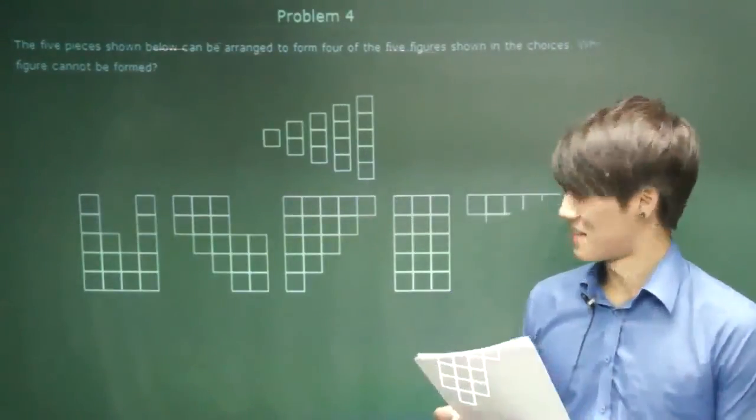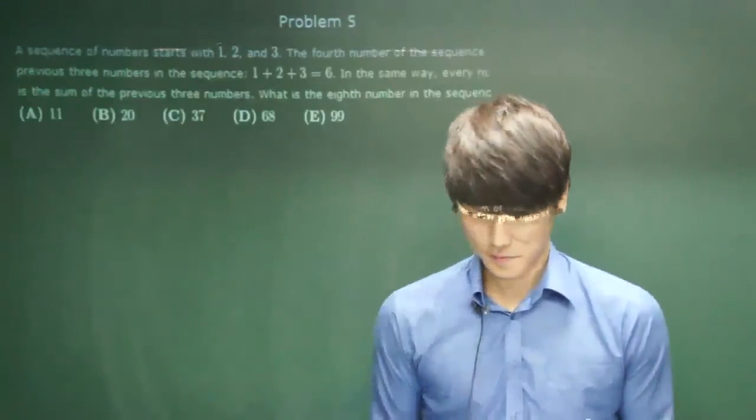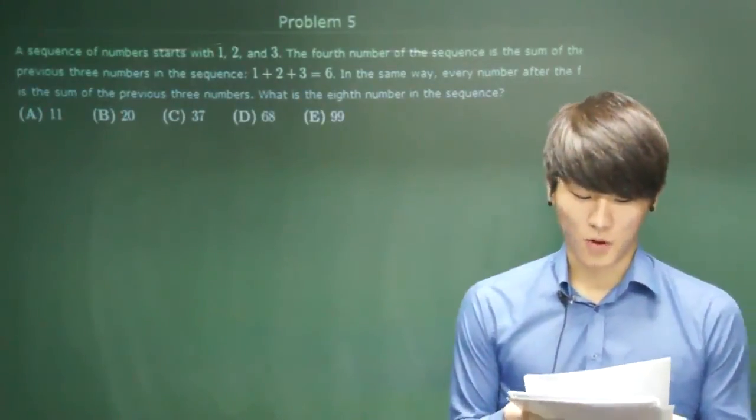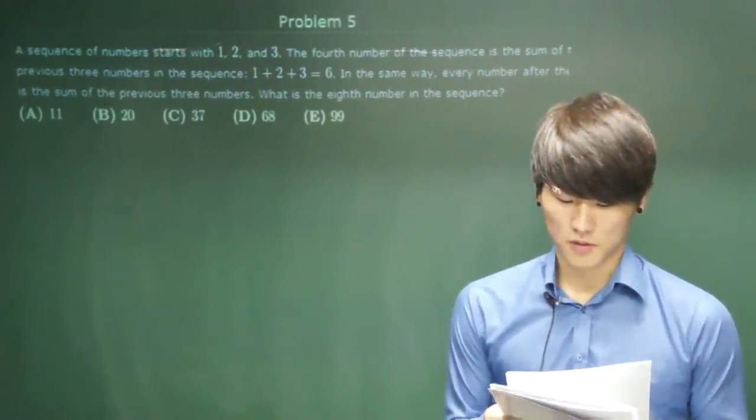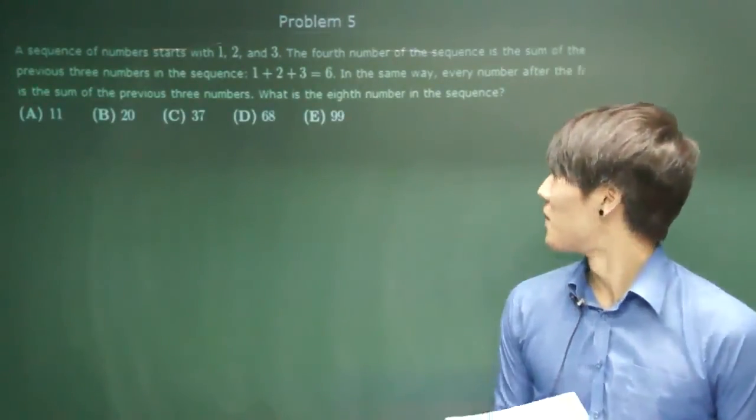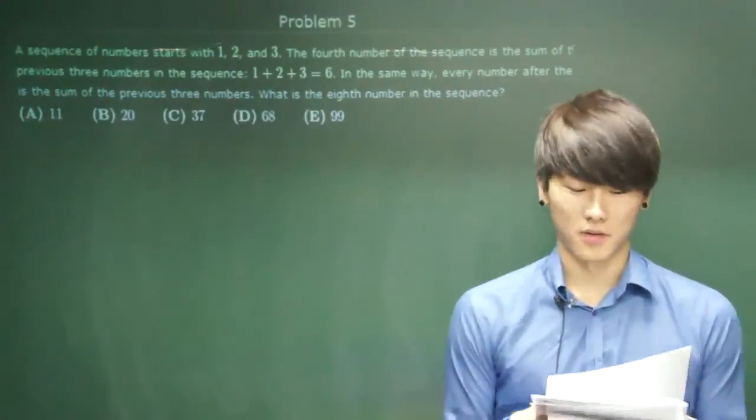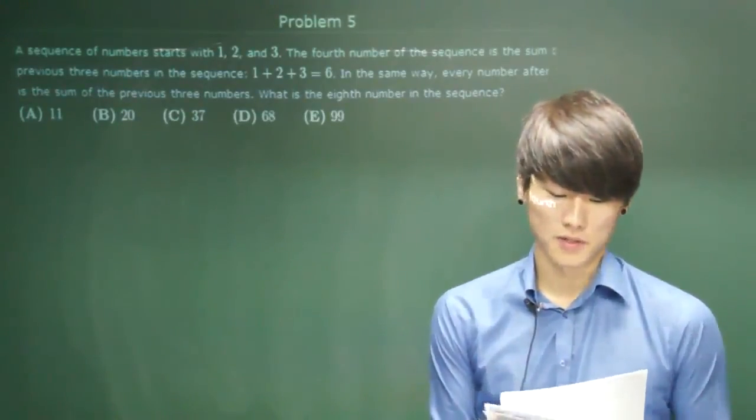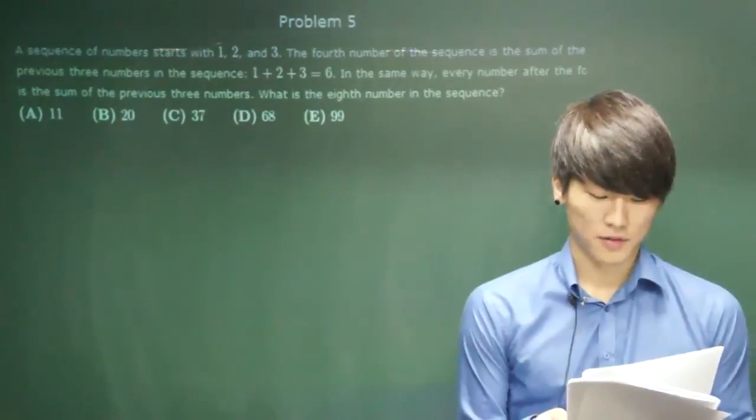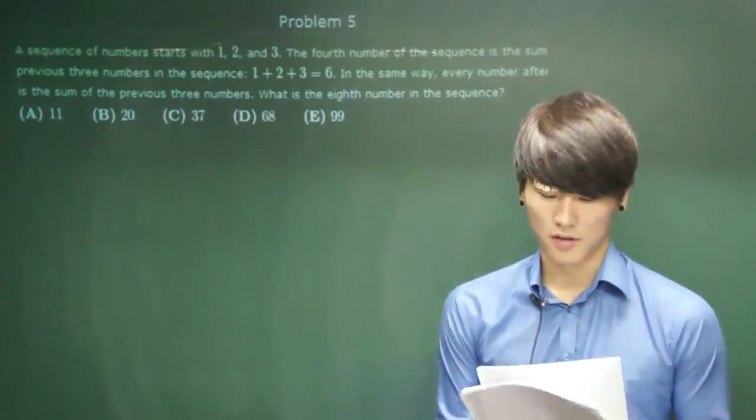Problem number five. A sequence of numbers starts with one, two, and three. The fourth number of the sequence is the sum of the previous three numbers in the sequence. So for example, one plus two plus three equals six. So the fourth number is six. In the same way, every number after the fourth is the sum of the previous three numbers. What is the eighth number in the sequence?